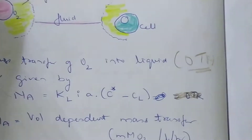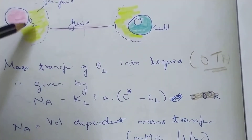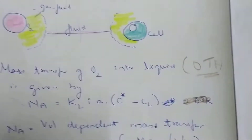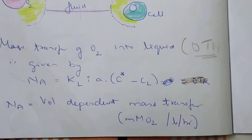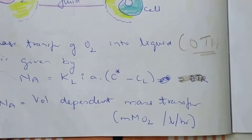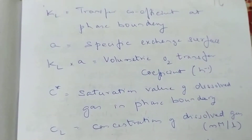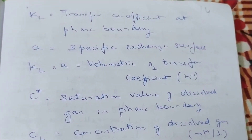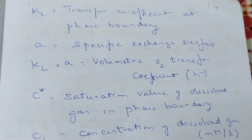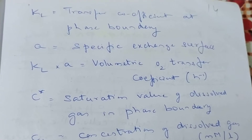Whether it's on the bubble, whether it's in the liquid phase medium, or in the gas film, or on the cell surface — all of that included is called NA, the volume-dependent mass transfer, in millimolar of oxygen per liter per hour. Now expanding the formula: kL is the transfer coefficient at the phase boundary, meaning how much kinetics it has — how much kinetic energy is present for transfer.